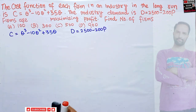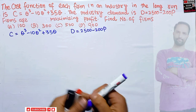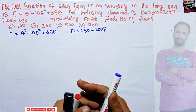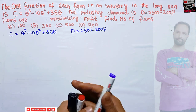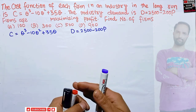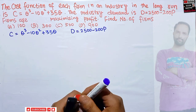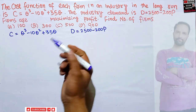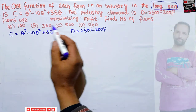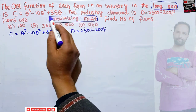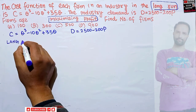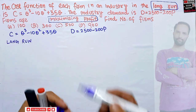We have to find the number of firms. To solve this question, we will find the individual firm's optimal output level — at what point, or rather what will be the optimal output for the individual firm. Since we are told it is the long run and firms are maximizing profit, let me write here: long run will imply...